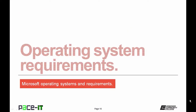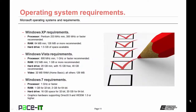Now let's discuss the system requirements for each operating system. The requirements for Windows XP were fairly minimal by today's standards. The minimum processor requirement was 233 MHz, with Microsoft recommending 300 MHz or faster. RAM required at least 64 MB minimum, with 128 MB or more recommended. The hard drive requirement was only 1.5 GB of space — which was actually a fair amount back in 2001.